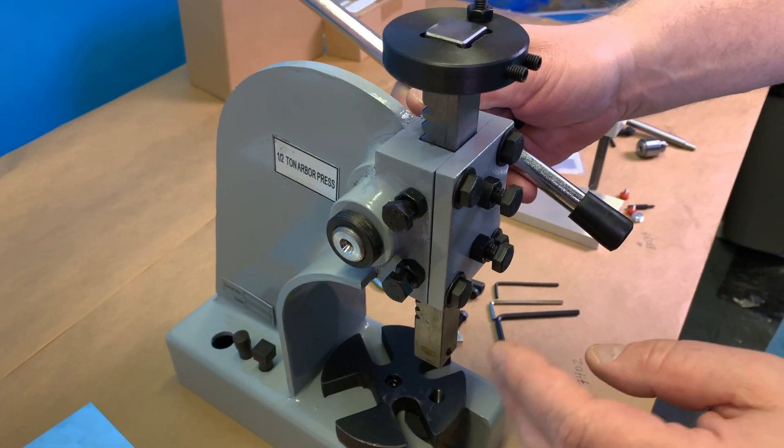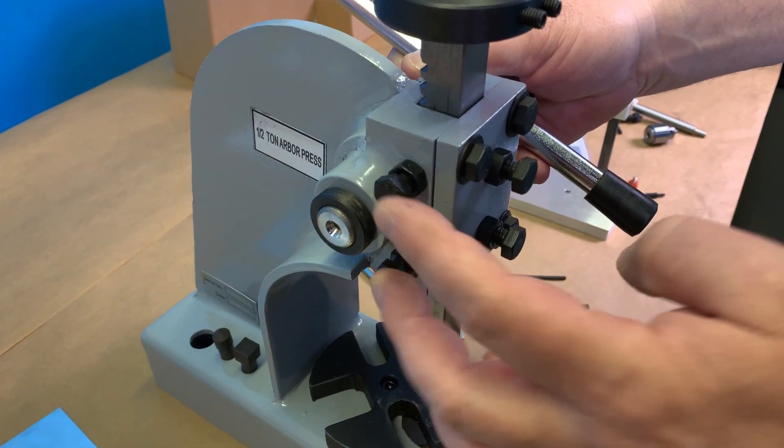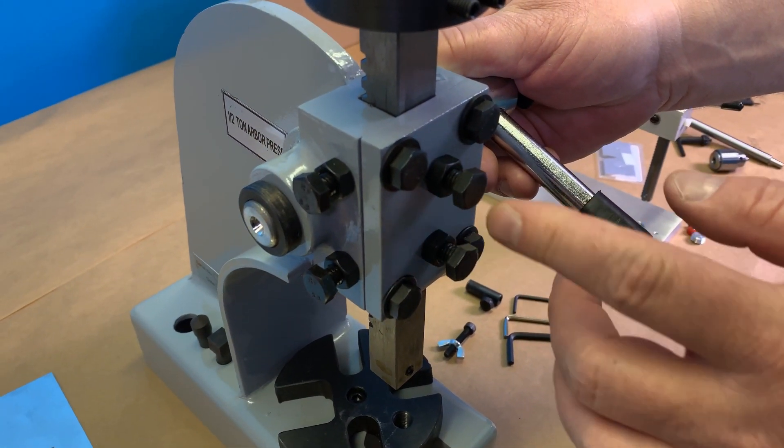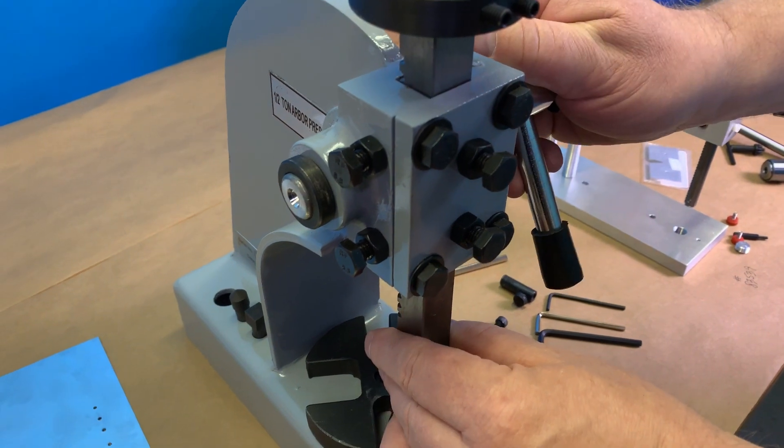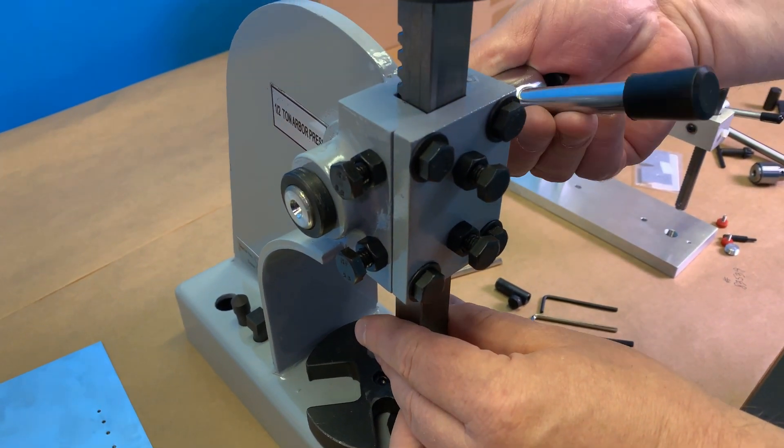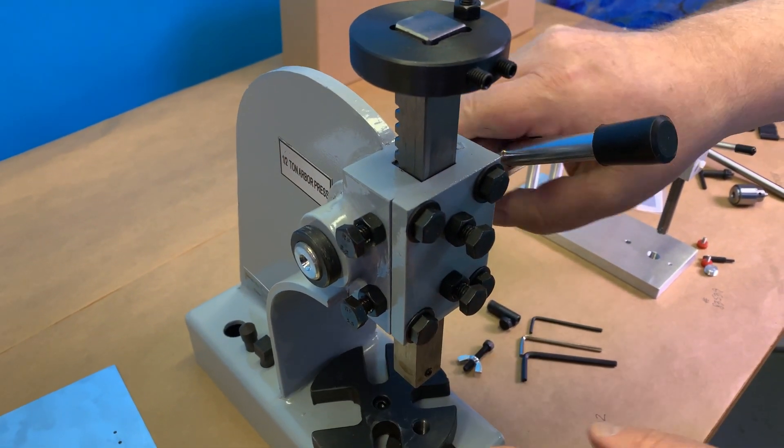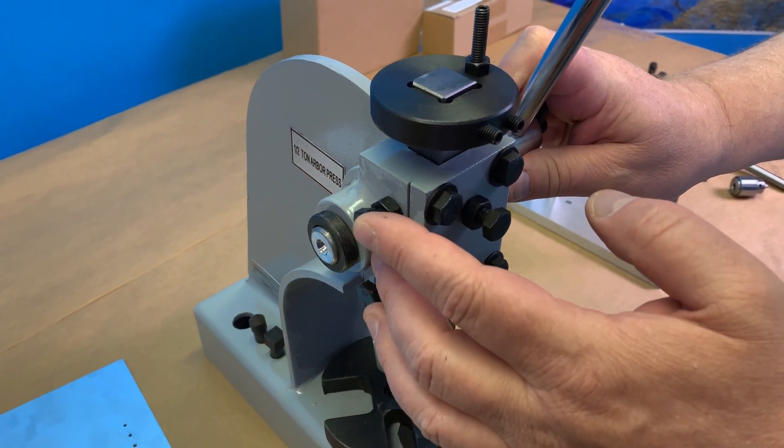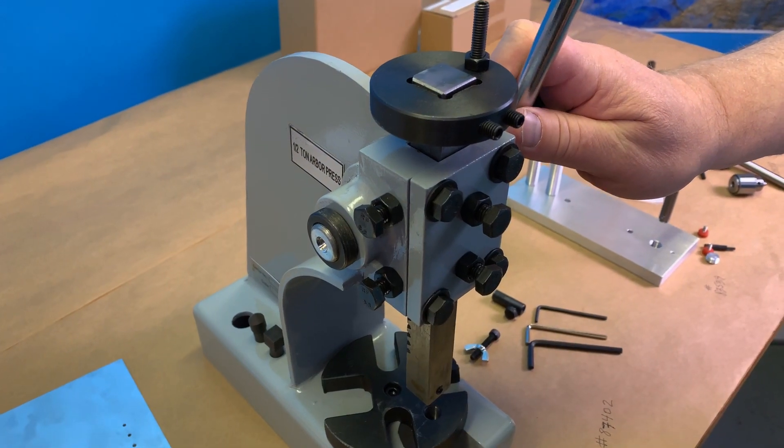It comes with four gib adjustments, two on the left side and two in the front. There are set nuts on these once you have the movement of the ram without any wobble left and right and also not dragging. So there is an adjustment that needs made once you get it set up.